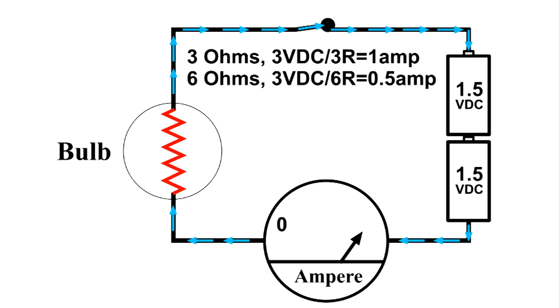However, if the bulb is six ohms, now the current flow in this circuit is a half amp. So once you have the power supply designed to handle the engineering specs, it's the load that's going to determine the current in the circuit.